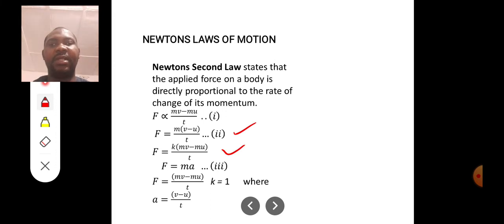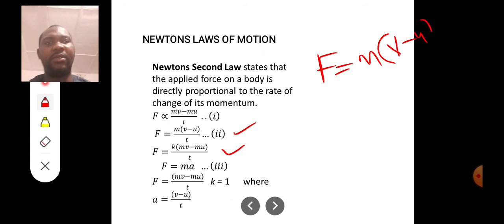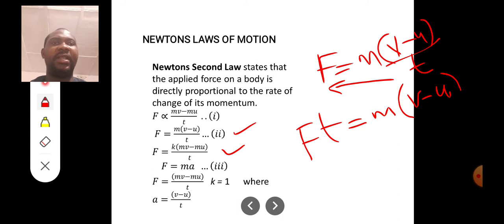K is a proportionality constant. Then by the time we cross multiply, you can see that two things can be said here. If you say that F is equal to M into V minus U all over T, if I cross multiply T, it means that FT is equal to M into V minus U, which is what we said earlier about impulse. Impulse is changing momentum.